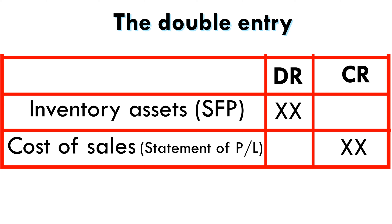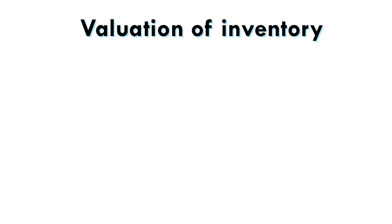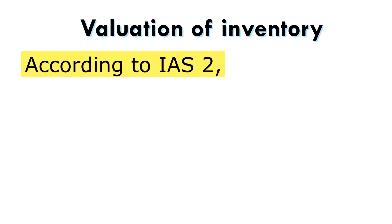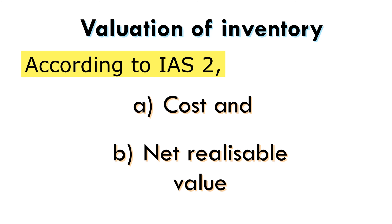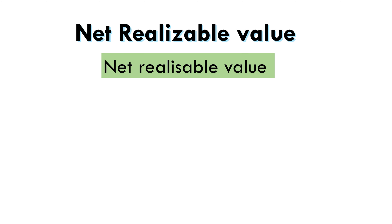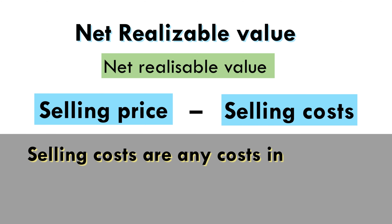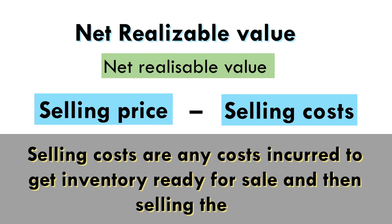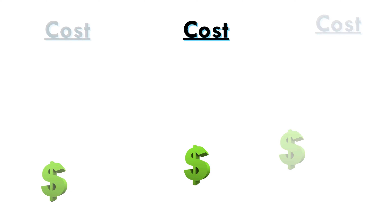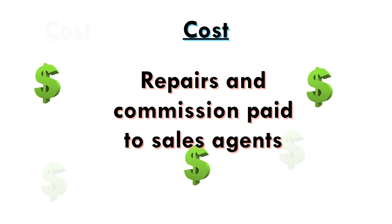The most important element in the standard is the valuation of inventory. According to IAS 2, inventories should be measured at the lower of cost and net realizable value. Net realizable value is computed by deducting the selling costs from the expected selling price. Selling costs are any costs incurred to get the inventory ready for sale and then selling them, such as repairs and commission paid to sales agents.